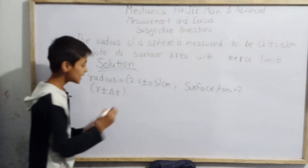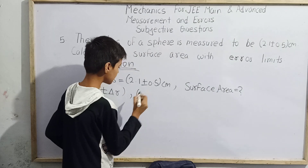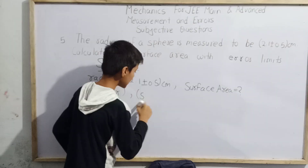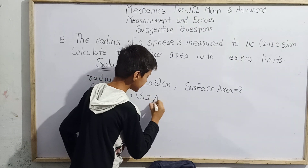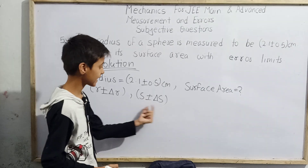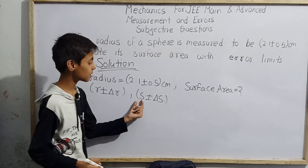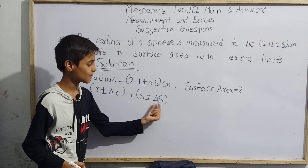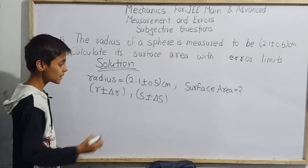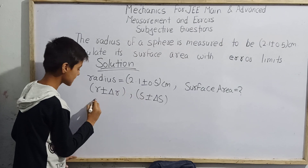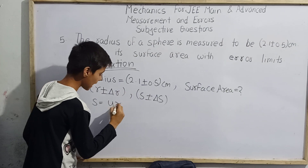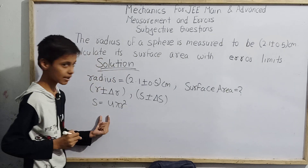The surface area will be of the form S plus minus delta S, similar to the radius form. So we have S plus minus delta S. First we'll calculate S. The formula for surface area is S equals 4 pi r squared.